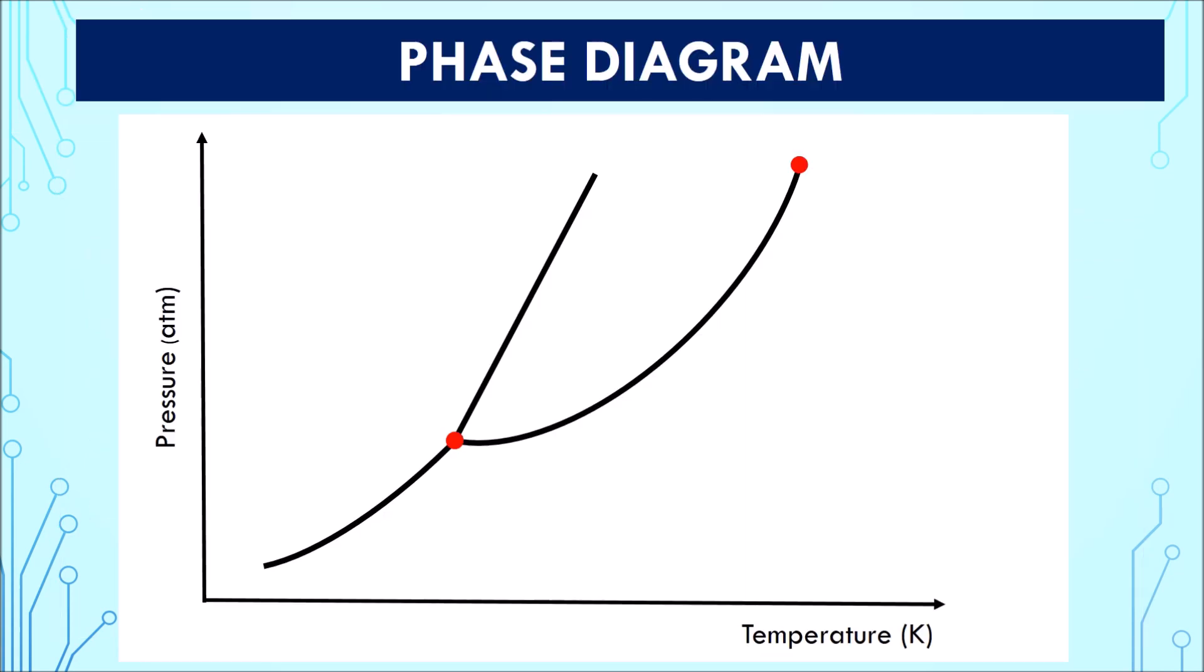Here is a simple figure of a phase diagram. Phase diagram is a graphical plot of pressure versus temperature that shows the condition at which a substance exists as solid, liquid or vapour. Here you can see pressure is labeled at the y-axis and temperature at the x-axis. There are three main features on a phase diagram.